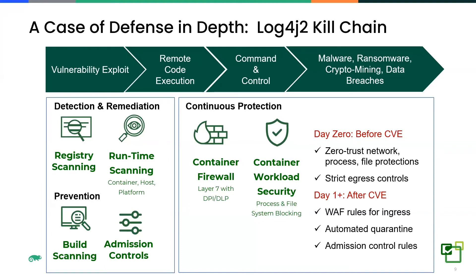How do we protect against this across the entire kill chain? First, detection and remediation: when this vulnerability was first disclosed, everyone scrambled to scan all container images in their registry to see if the vulnerability existed, and then scan all running containers to see if there was an immediate risk of active exploit. Once detected, you remediate — send it back through the pipeline, update to the newest version, then deploy back to production. With a highly automated, responsive pipeline, that could be done the next day; however, many traditional enterprises may take a week or even a month depending on their specific environment.